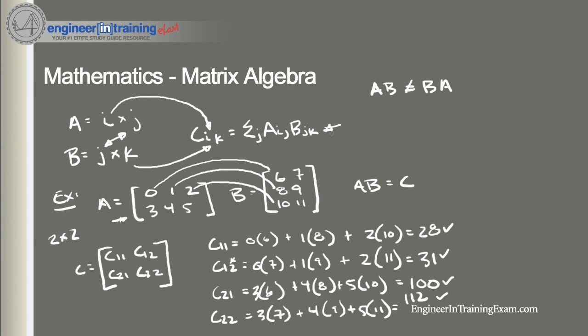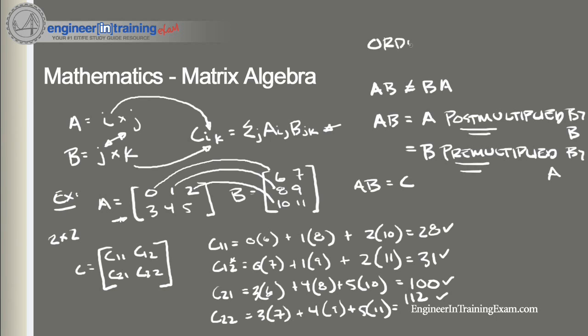Because order is important in the multiplication of matrices, to be consistent in our language we can say that the product AB is equal to A post-multiplied by B, or this could be written as B is pre-multiplied by A. Post-multiplied and pre-multiplied will tell us the order in which we are multiplying the two matrices. Remember that unlike subtraction and addition where order is not important, in matrix multiplication order is important.